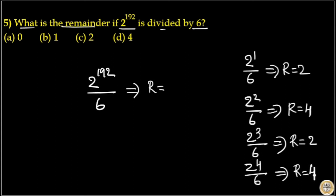Here you can see for 2 raised to 1, remainder 2. 2 raised to 2, remainder 4. Again, 2 raised to 3, remainder 2. Again, 2 raised to 4, remainder 4. So 2 and 4 are repeated for 2 raised to n divided by 6.